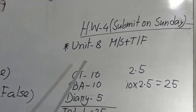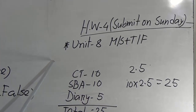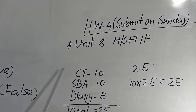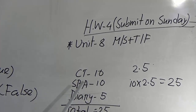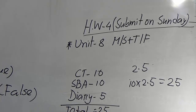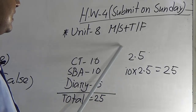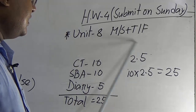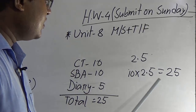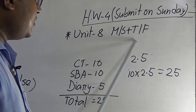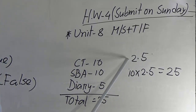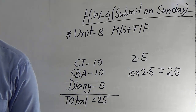Now for the SW — SW number 4, Unit 8, make sentence and true/false. You know you have city mark 10, SBA 10, and diary 5 — total 25 marks. We are giving SW 2.5 marks, and we multiply by 10 to get 25. So if you don't submit your SW, you will not get the 2.5 marks for SW.